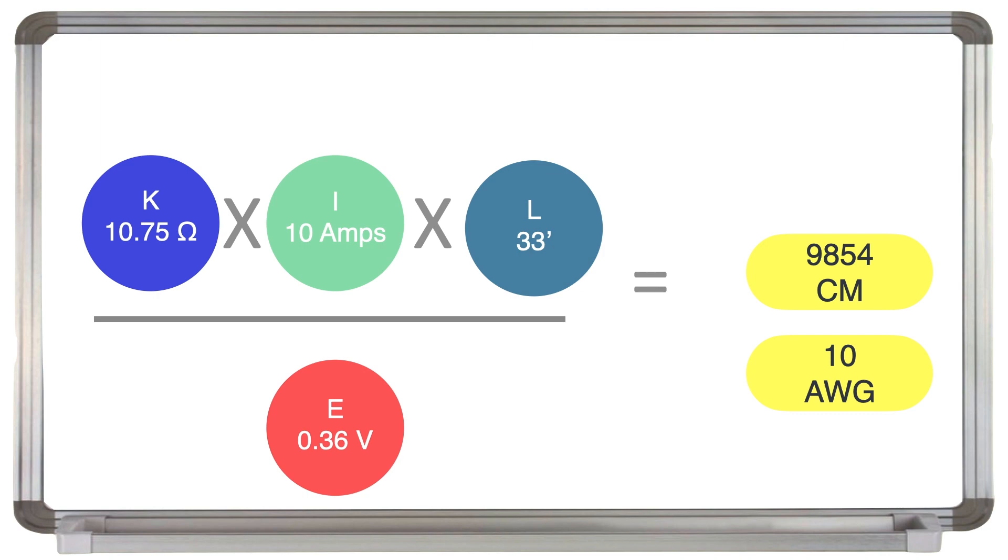Now the only available conductor nearest to and above this value is 10 AWG. This is a fairly heavy cable for such a light load. But given this length of cable and the fact that it is an essential load, it is what's required to ensure we do not exceed the 3% voltage drop limit.